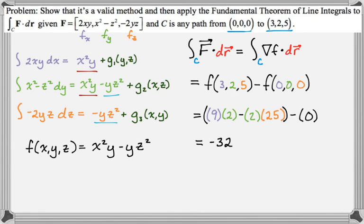You could actually, this one's pretty easy, if you treated it as a line segment, you could evaluate the line integral in a more direct way and see that you also get negative 32, which is always reassuring when you're first doing these sorts of things. But anyway, that's a good example of showing a vector field is conservative, finding the potential function, and then using the fundamental theorem of line integrals. I hope you found this helpful, and good luck!